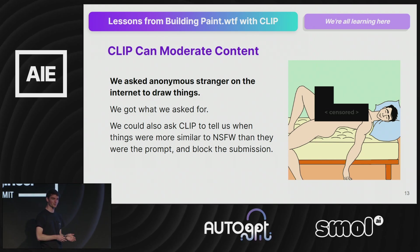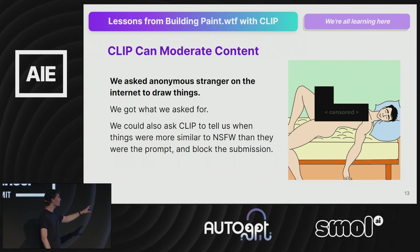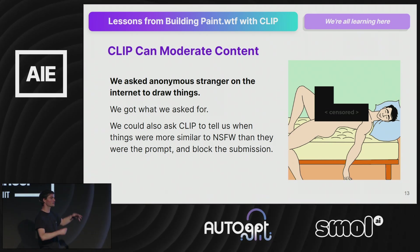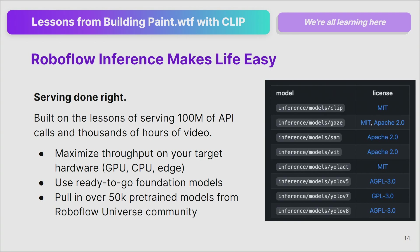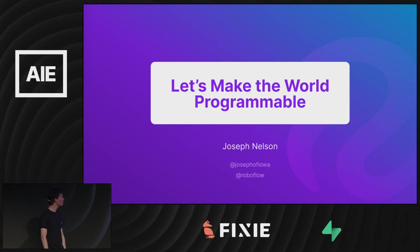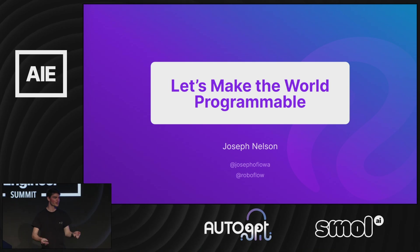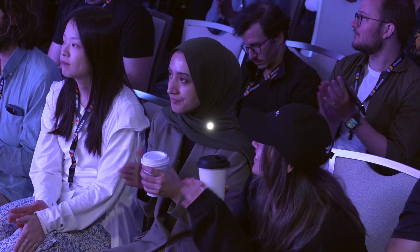You could build a zero-shot 'not hot dog' detector with CLIP and inference. Notably, strangers on the internet were smart — they'd draw the prompt but sneak other stuff in, making it a cat and mouse game. The last thing: Roboflow inference makes life easy. We used the inference stream function, which includes learnings from serving hundreds of millions of API calls across thousands of hours of video. It maximizes throughput on your target hardware. I was running an M1 at about 15 FPS. Ready-to-go foundation models, plus over 50,000 pre-trained models. Let's make the world programmable. Thanks, Natter and Swix!